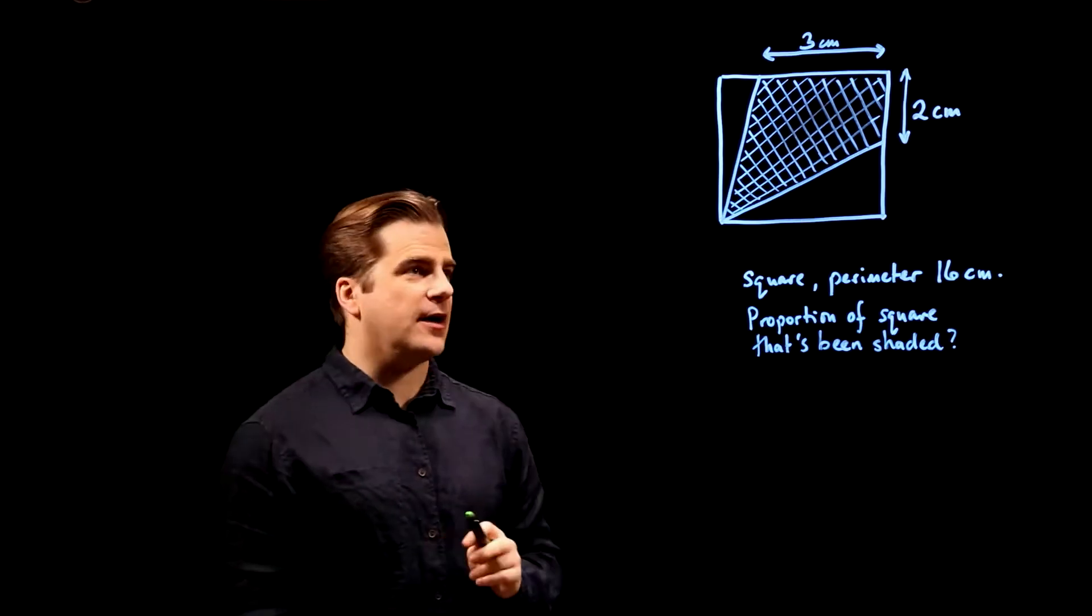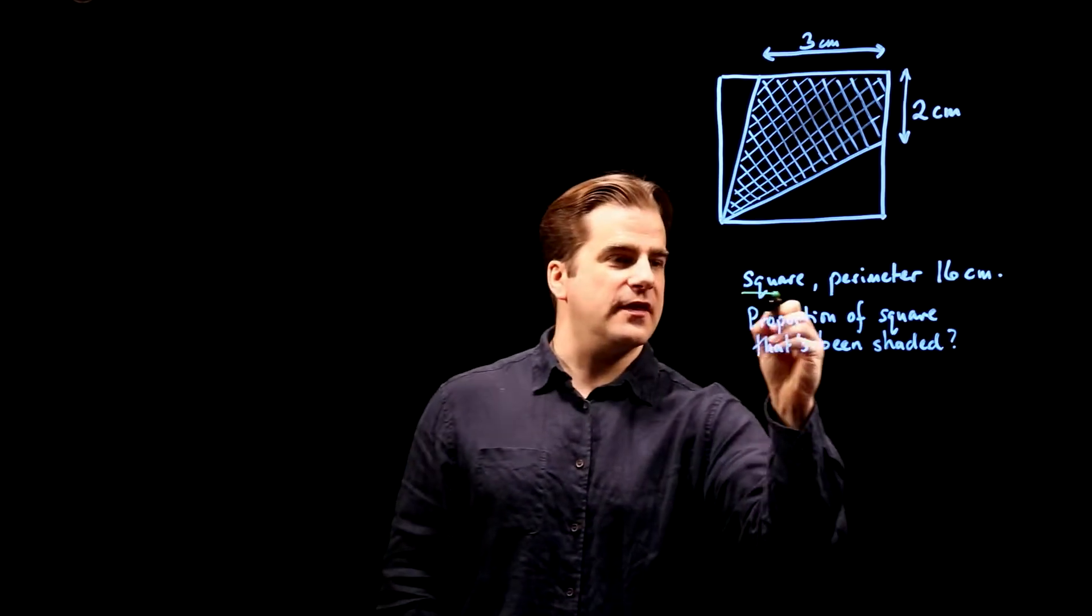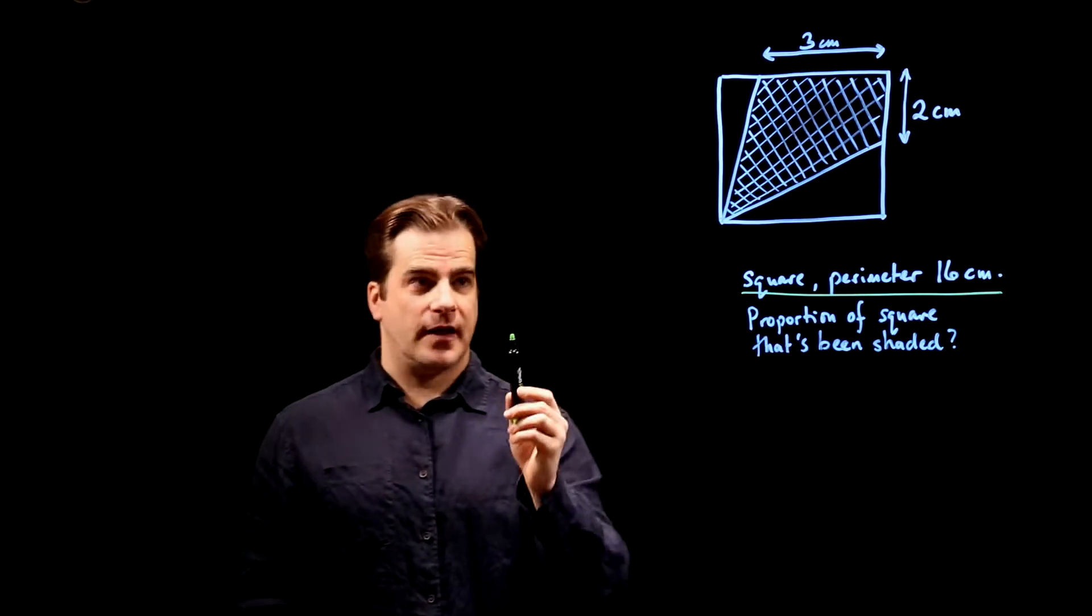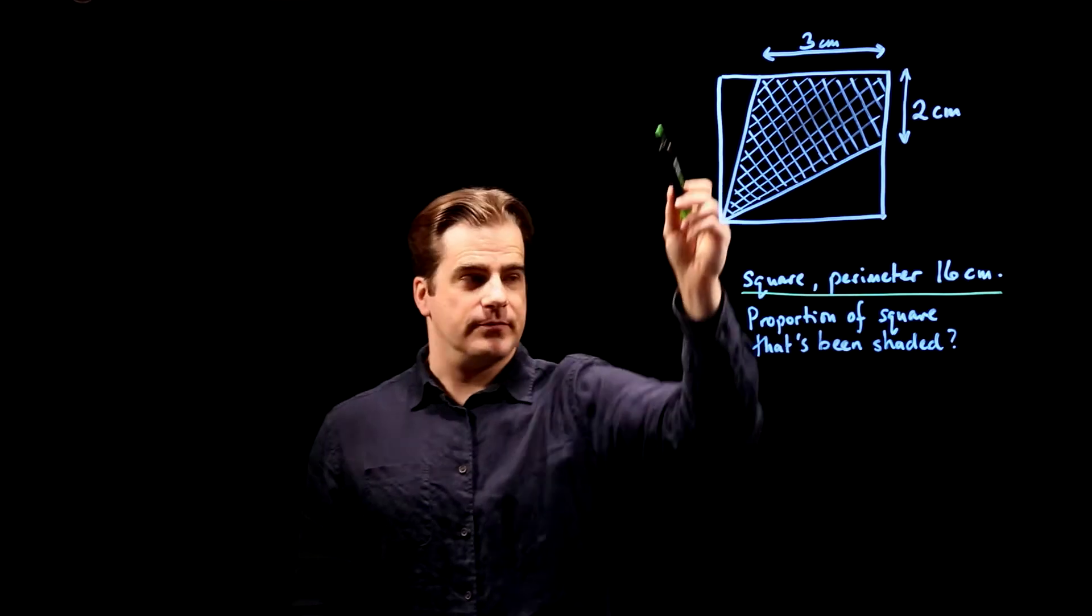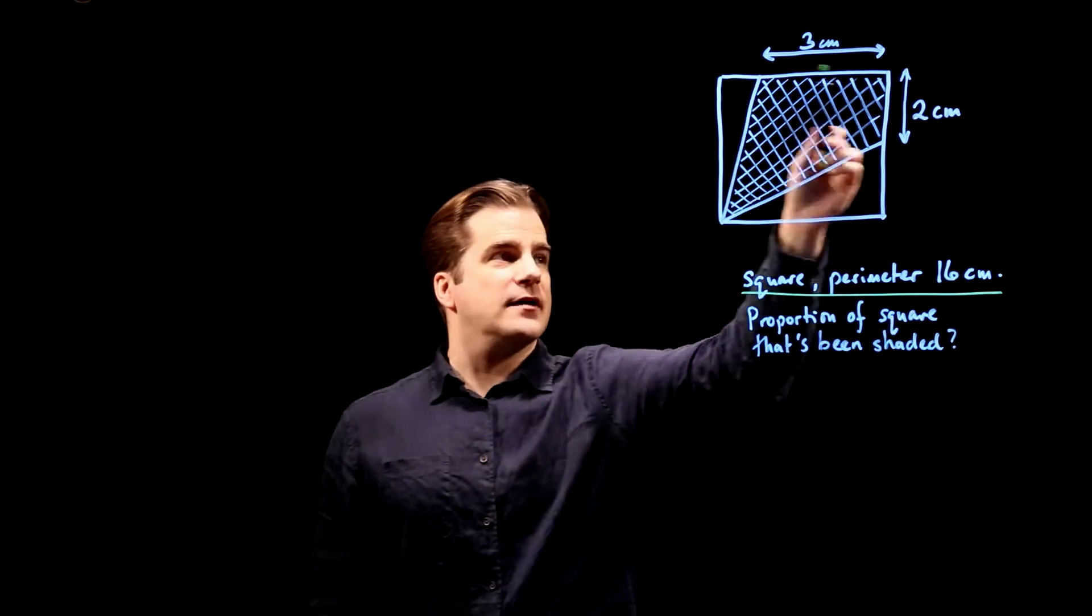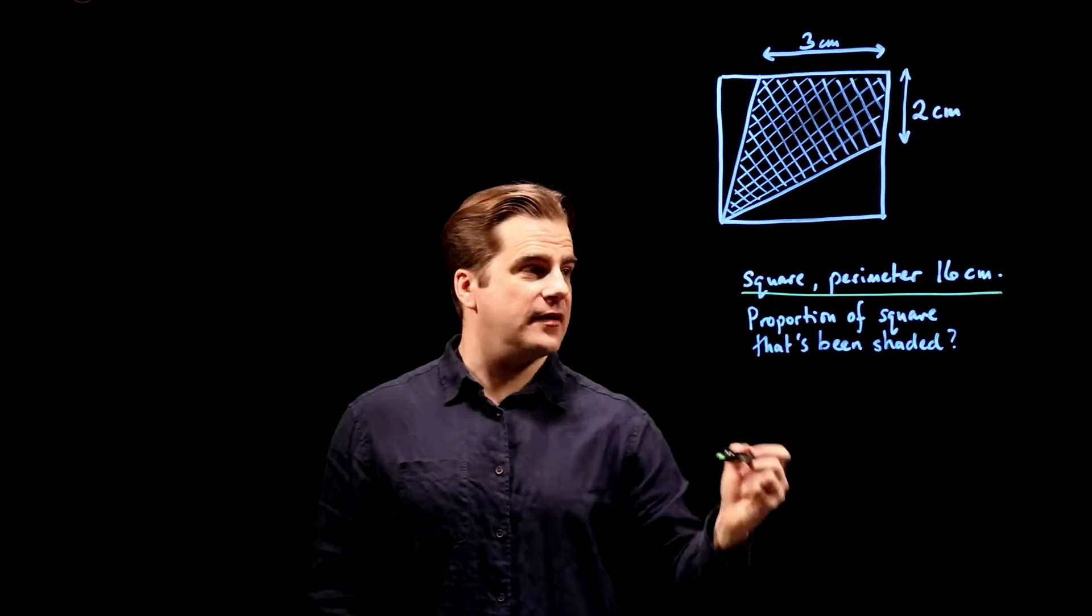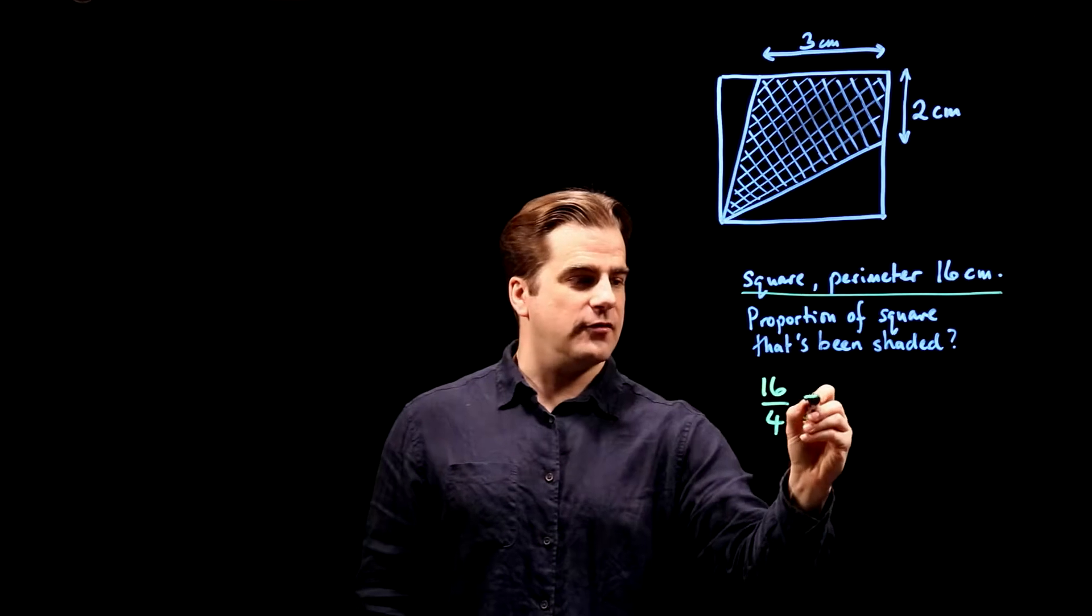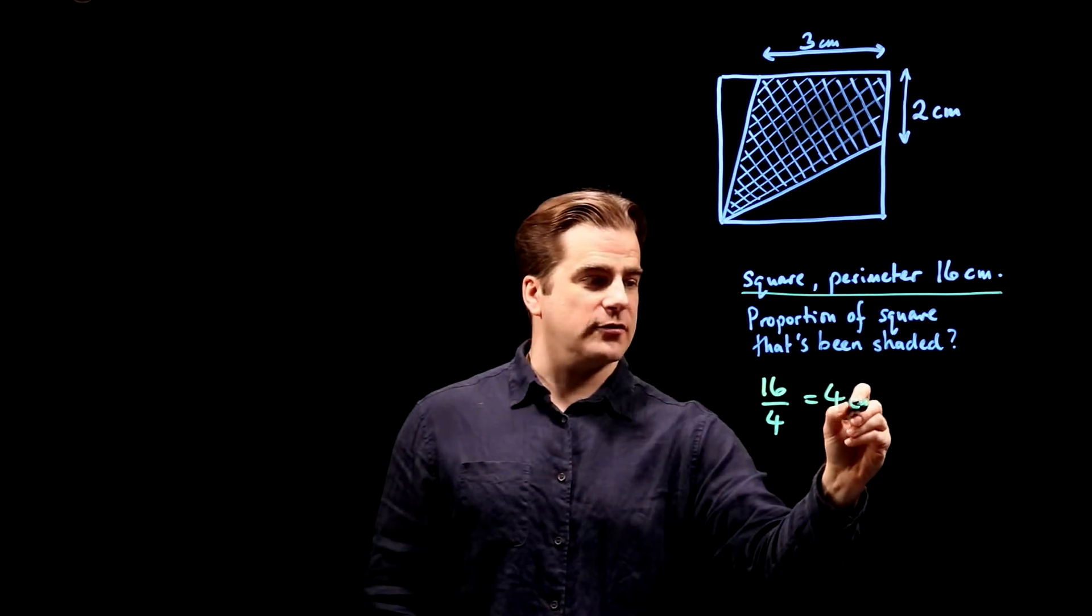This is all the information we have. We have to use this. We're told that firstly it's a square, so that means the sides are the same length and its perimeter is 16 centimetres. So square has four sides, if its perimeter is 16 centimetres, then 16 over 4, its sides are 4 centimetres each.